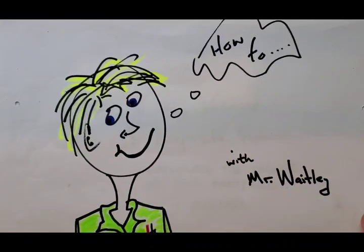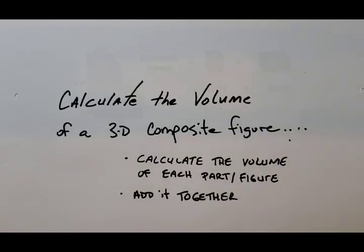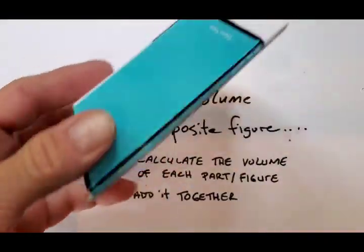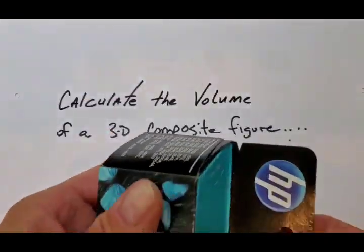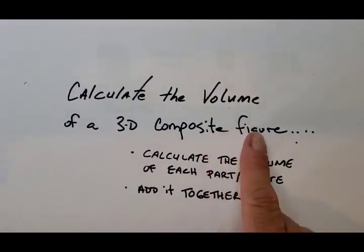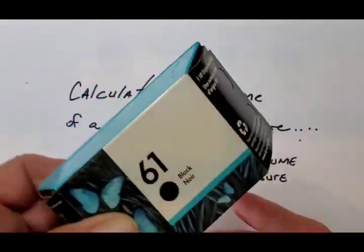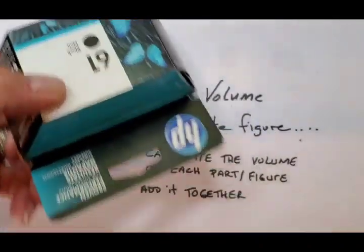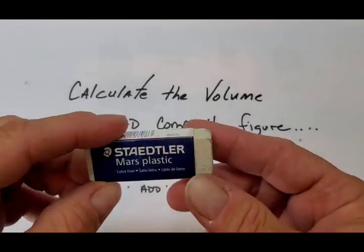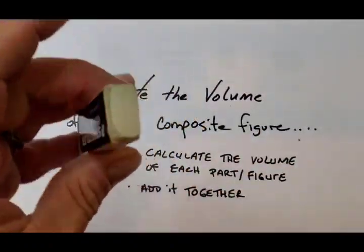Hello, it's Mr. Waitley. Today we're going to take a look at calculating the volume of three-dimensional composite figures. We're surrounded by these things. I was going to get some printer paper and looked in my cabinet and thought, look at this. For example, obviously we've got a trapezoid. This box is a composite figure — we could say it's two triangular prisms and then in the middle a rectangular prism. This would be a three-dimensional rectangular prism.